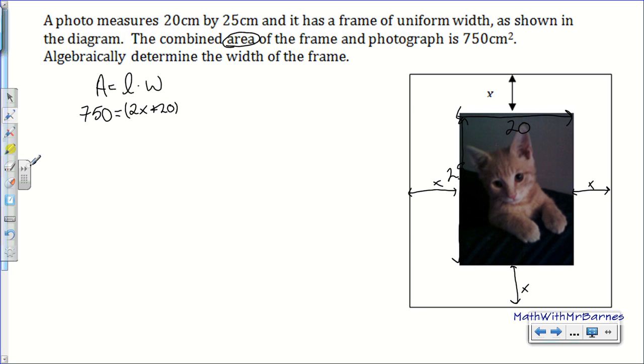Now, what is the length and the width of this frame? So if I look here, it's 20 right here and I have an x and an x on either side. So this entire width of this frame is x plus the 20 for the photo and then another x. So that's two x's and 20. So that gives me 2x plus 20. And then this guy right here, so that's 25. So x, another x, that's 2x plus 25. So that is the length and the width.